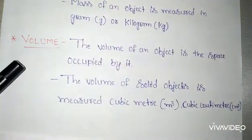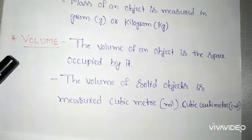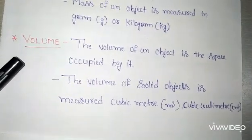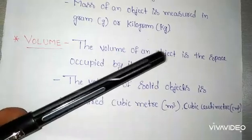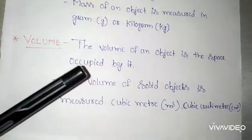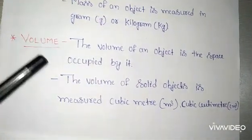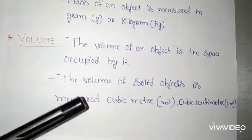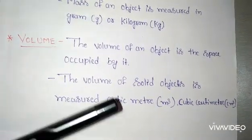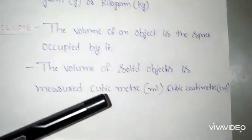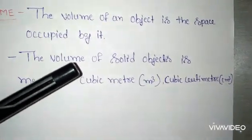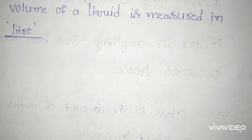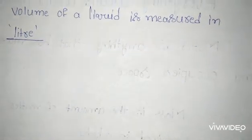Now, we should know what is the volume. Volume of the matter. The volume of an object is the space occupied by it. The volume of solid objects is measured in terms of cubic meter or cubic centimeter. The volume of liquid is measured in terms of liter.